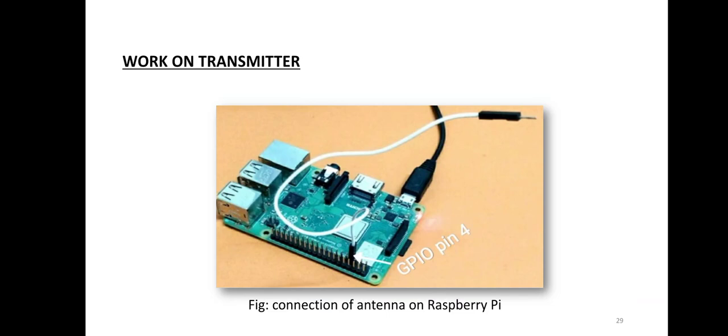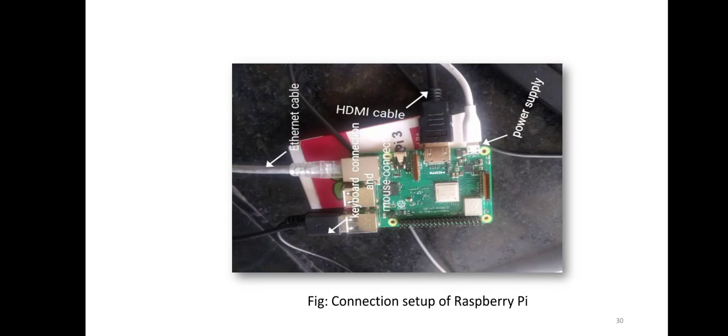Next we worked on building the transmitter setup, for which we connected a patch wire to GPIO pin 4 of the Raspberry Pi. The patch wire works as the antenna of our transmitter. This is the complete connection of the Raspberry Pi for the transmitter setup.